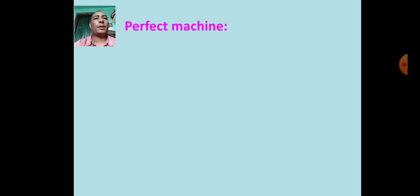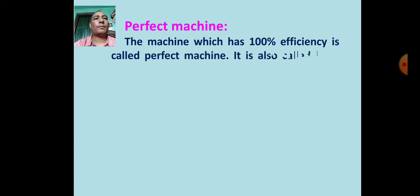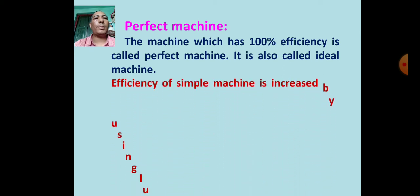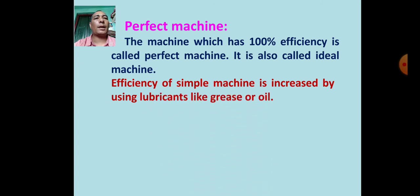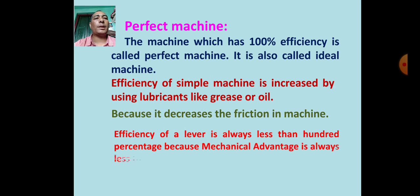A perfect machine is one which has 100% efficiency; it is also called an ideal machine. The efficiency of a simple machine can be increased by using lubricants like grease or oil, because they decrease friction. The efficiency of a lever is always less than 100% because mechanical advantage is always less than velocity ratio due to frictional force.